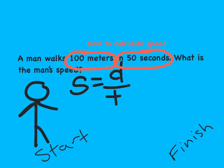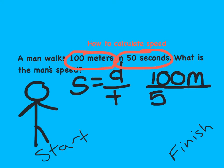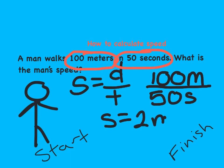Now we need to plug these two numbers into the formula. Our D is going to be 100 meters — I'll abbreviate meters using an M — divided by 50 seconds, abbreviated with an S. So 100 meters divided by 50 seconds means our speed is going to be 2 meters per second. The man walked 100 meters in 50 seconds, meaning his speed was 2 meters per second.